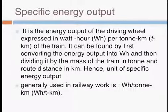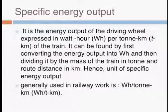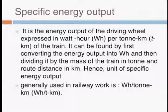Now, talking about specific energy output. Specific energy is the energy output of the driving wheel, and it is expressed in watt-hours per ton-kilometer of that particular train. It can also be found by first converting energy output into watt-hours and then dividing it by the mass of the train in tons and the route distance in kilometers. So finally, the specific energy output is expressed in Wh per ton-kilometer.